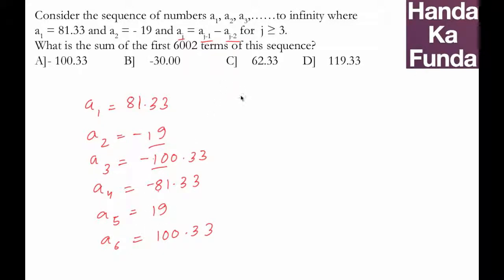What will be a7? It will be 100.33 minus 19, or 81.33. a8 will be a7 minus a6, which is 81.33 minus 100.33, or -19. a9 will be the difference of these two terms, or -100.33.